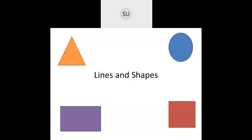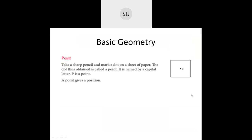Before that, let's review what we have already studied in this chapter — lines and shapes. We studied some basic geometry. We studied what is a point. A point gives you a position and you can represent it by any of the capital alphabet letters.